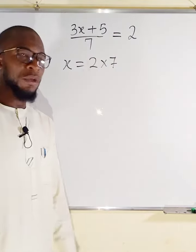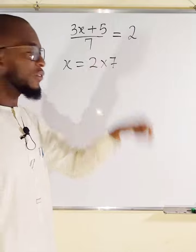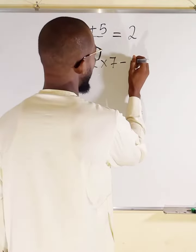Then we move to the top. Five is adding, so we subtract it. That is the opposite of addition.